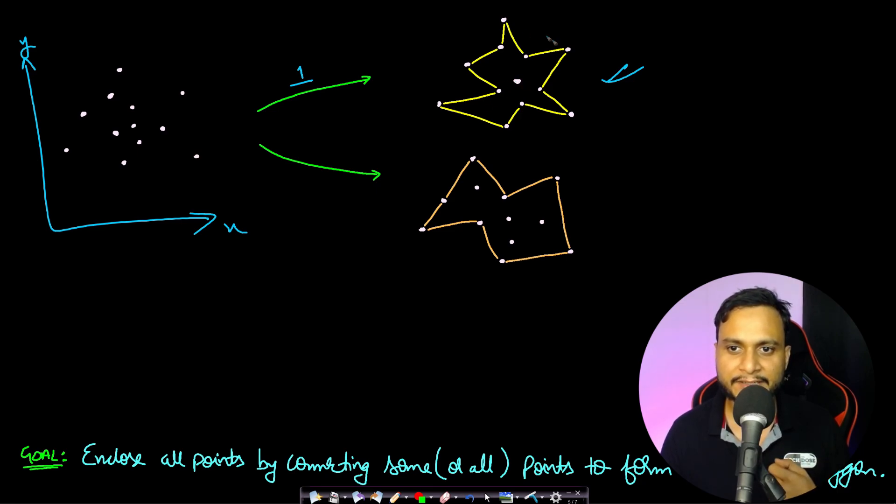Now if I look at the second figure, then in this case this is also true that we have connected the points in such a way that either the points lie on line or they are inside the enclosed figure, but none of the points is outside of the figure. So these two actually follow our constraint.